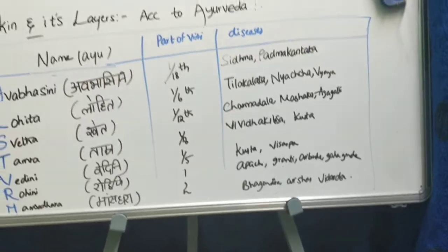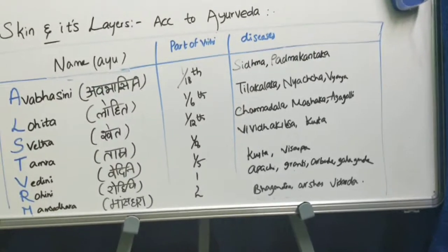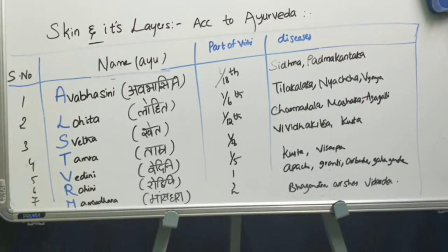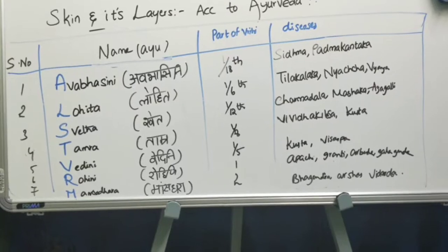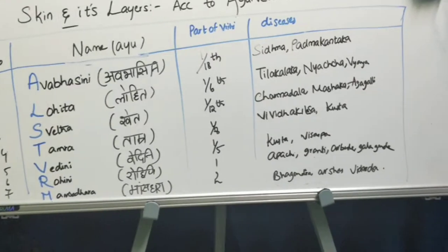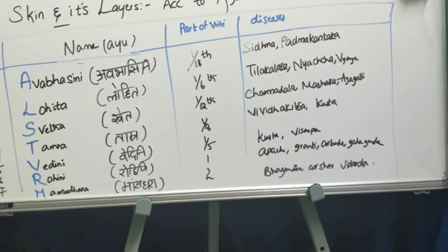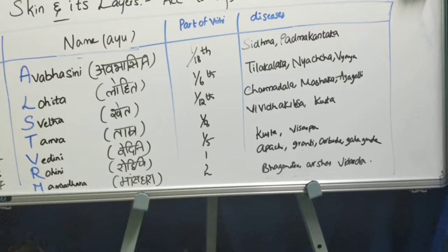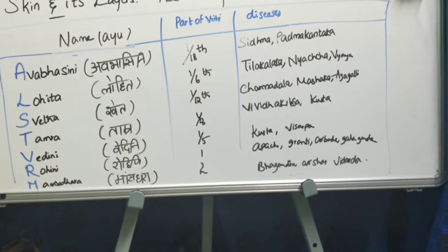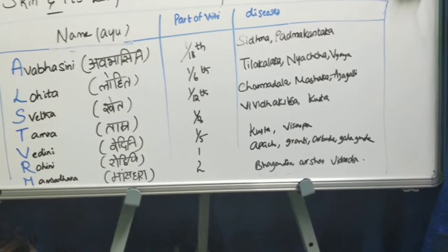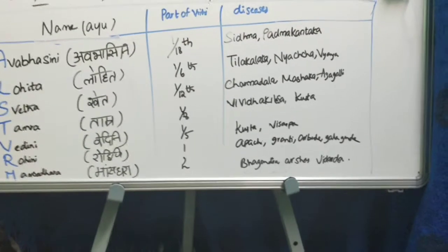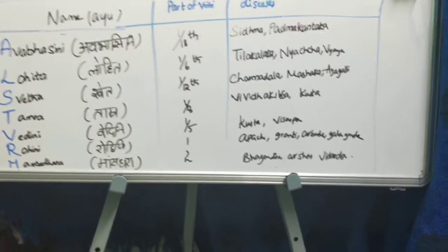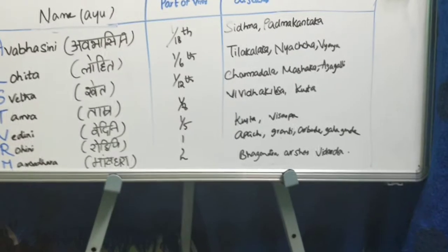The thickness (Rihi measurements) of each layer: Avabhasini is 1/8 Rihi, Lohita is 1/6 Rihi, Shweta is 1/12 Rihi, Tamra is 1/8 Rihi, Vedini is 1/5 Rihi, Rohini is 1 Rihi, and Mansadara is 2 Rihi.